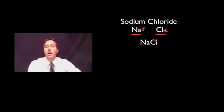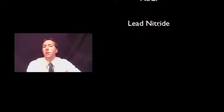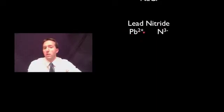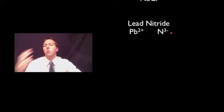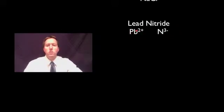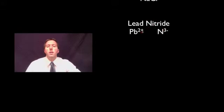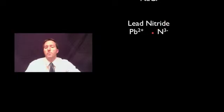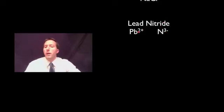Let's try a harder one: lead nitride. Lead is Pb²⁺ and nitride is N³⁻. The question is how many lead ions do we need to go with how many nitride ions so the compound is overall neutral. We look for the lowest common multiple — the smallest number that both charges can multiply to.